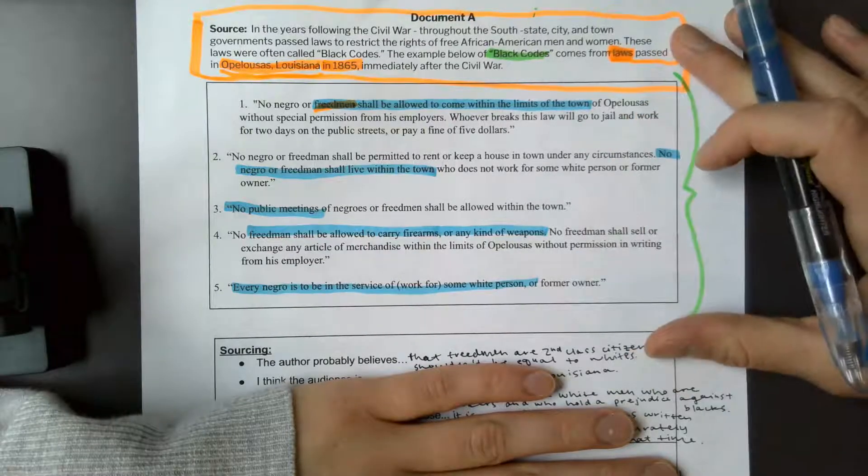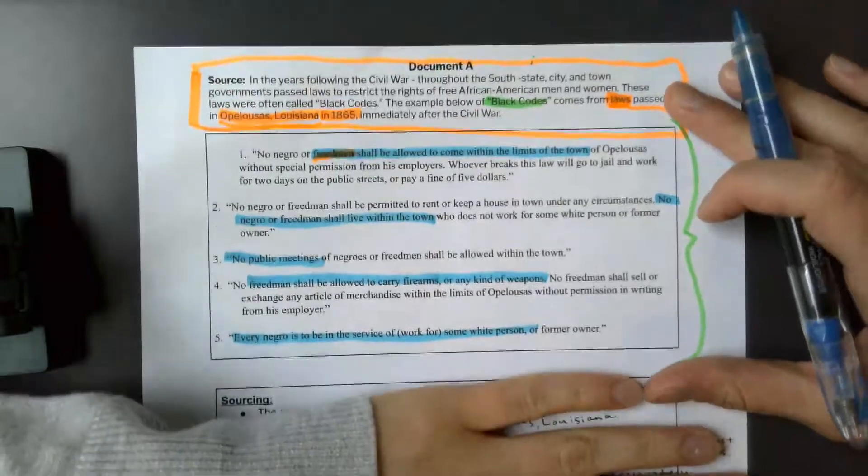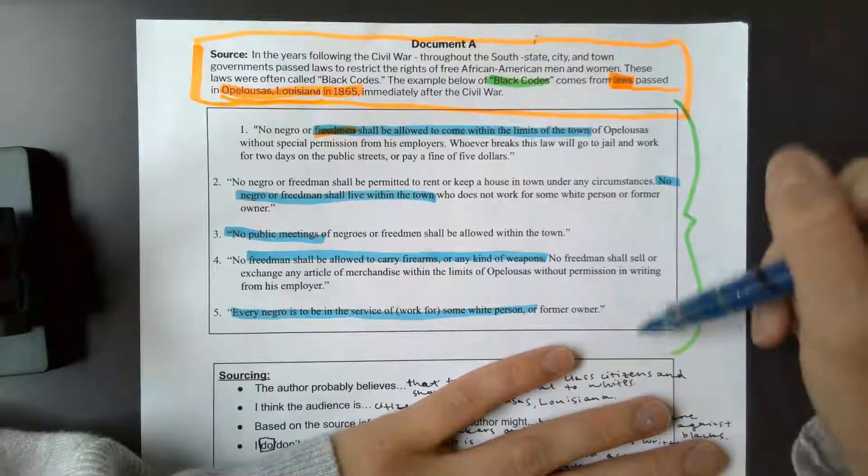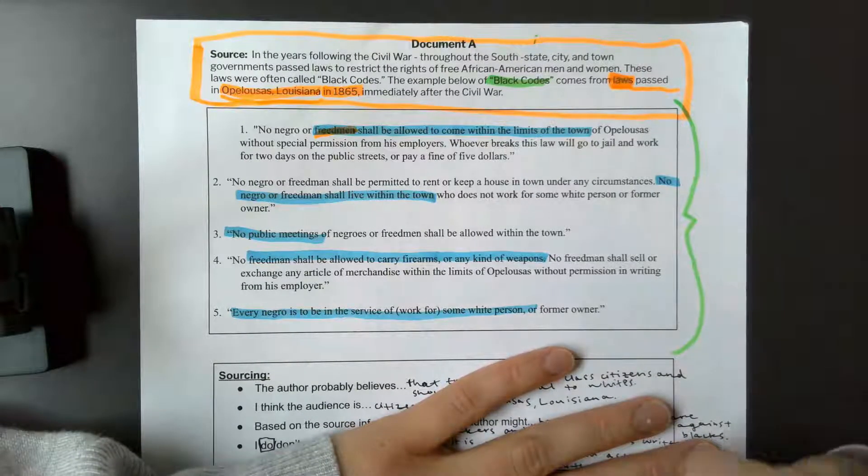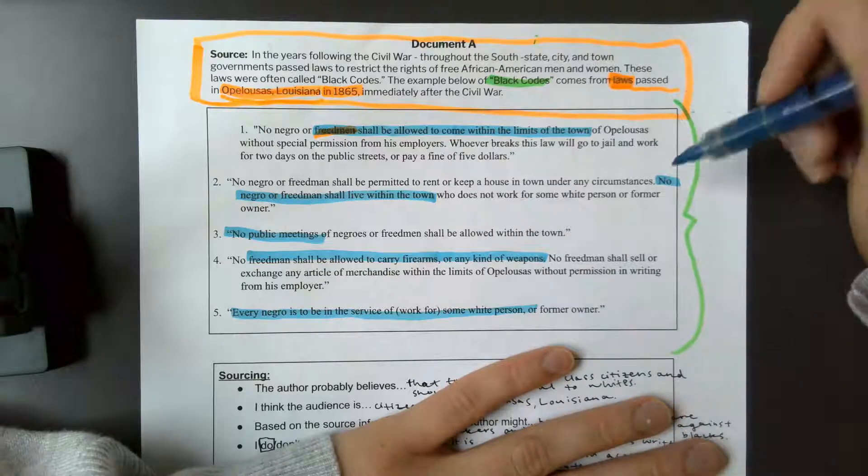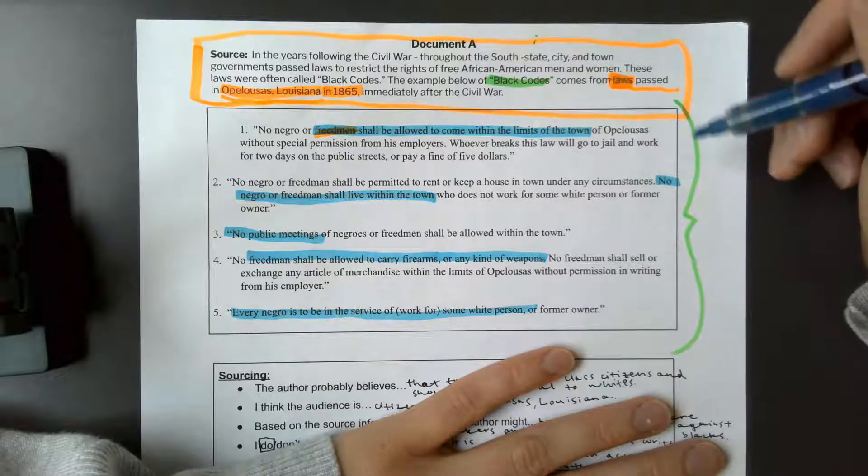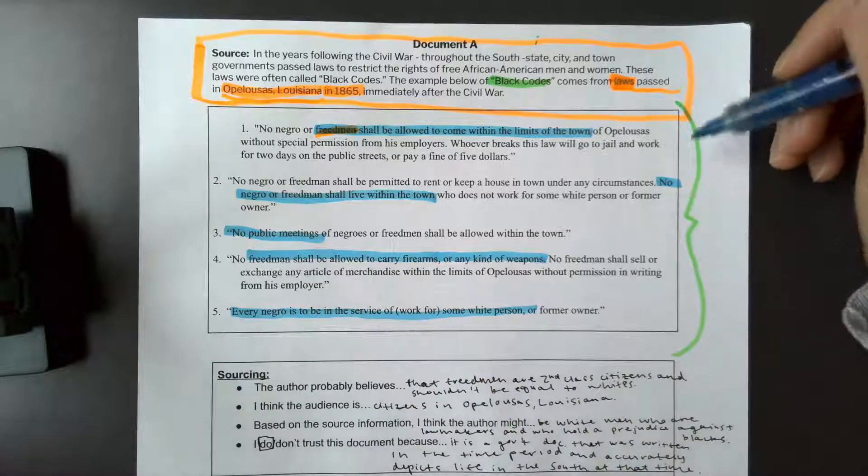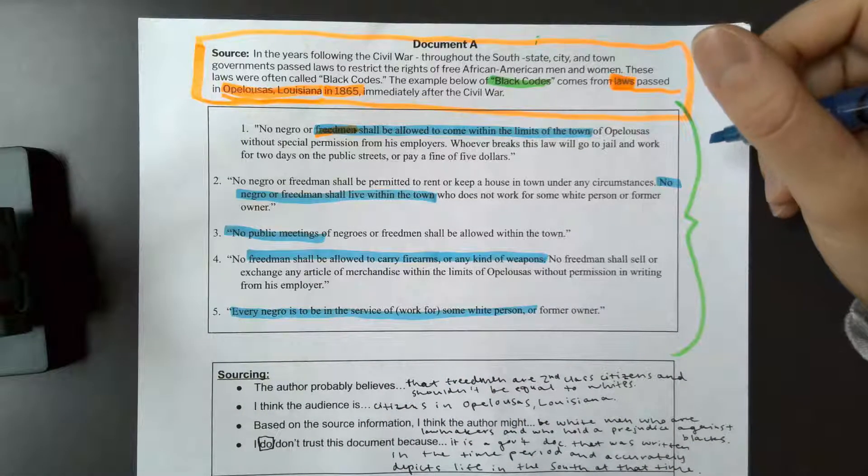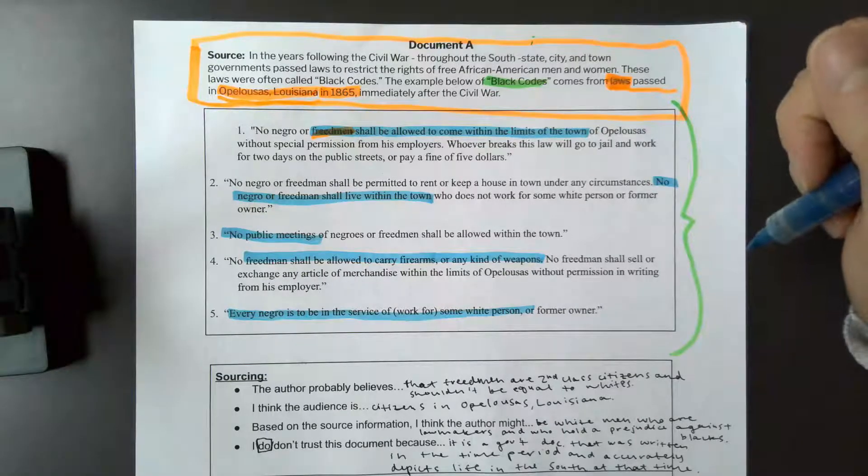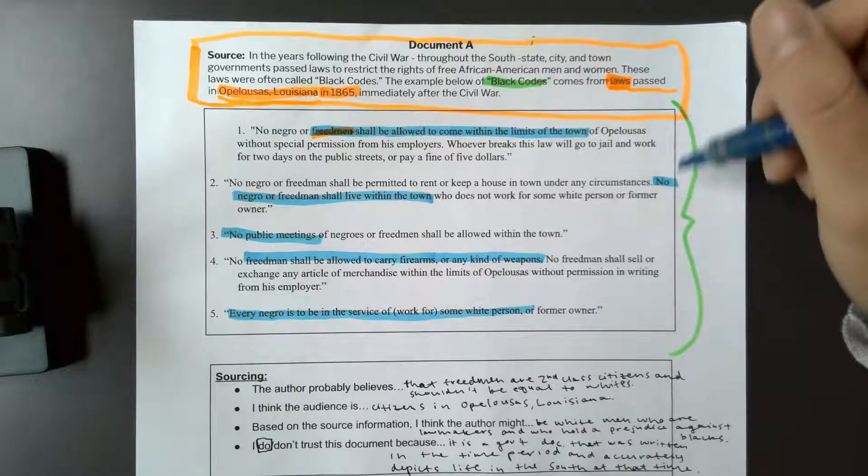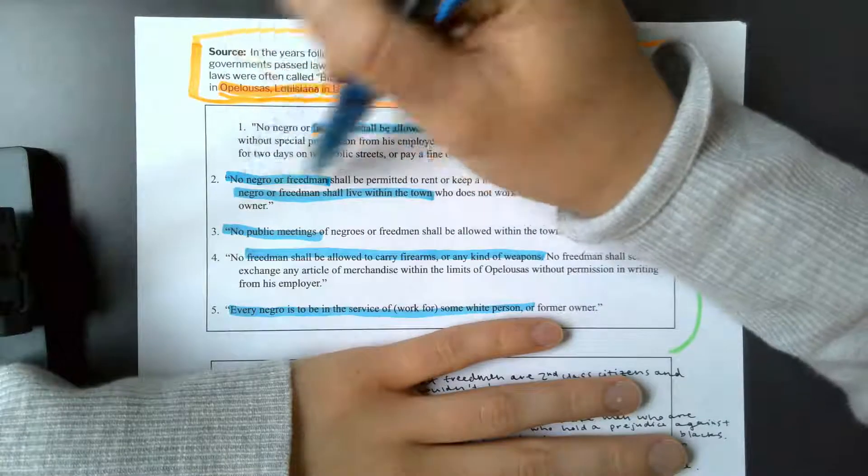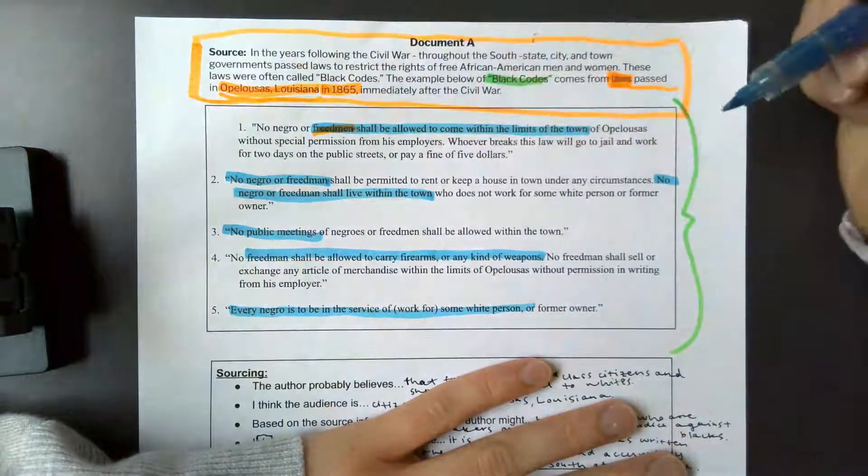What language does the author use to persuade the document's audience? I think they do a pretty good job. They keep it very professional writing. So there's nothing really inflammatory about this. It's very basic writing, very technical, and I think they did that on purpose so that they would seem more reasonable. So just the way they phrased things, they always refer to the African Americans as negro or freedmen.